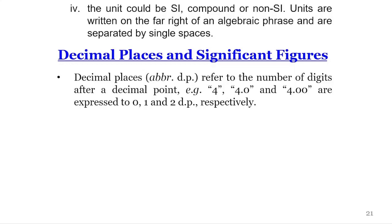For instance, if after a number and after a decimal point there are two digits, then it means that number is written in terms of two decimal places. And if it's one, it means it's written in terms of one decimal place, and so on. For instance, 4, 4.0, and 4.00 are expressed to 0, 1, and 2 decimal places respectively.